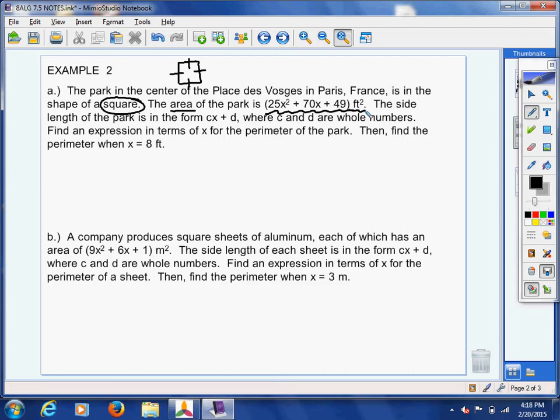The side length of the park is in the form Cx plus D, where C and D are whole numbers. Find an expression in terms of x for the perimeter of the park, and then find the perimeter when x is eight feet.